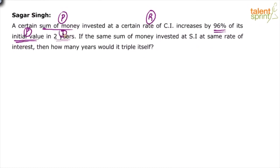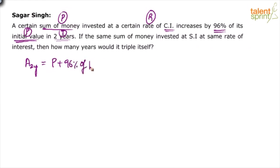If we try to interpret the statement, the total amount in two years — this is a compound interest case — is equal to the initial value plus 96% of the initial value. So the amount after two years is P plus 96% of P, which is 196% of P.